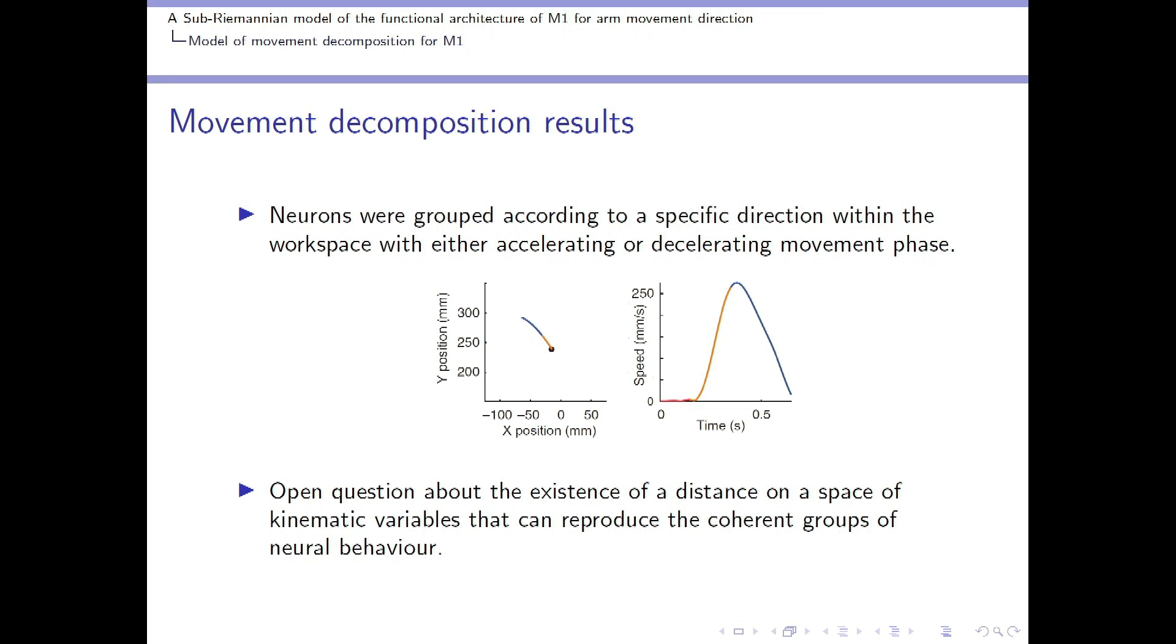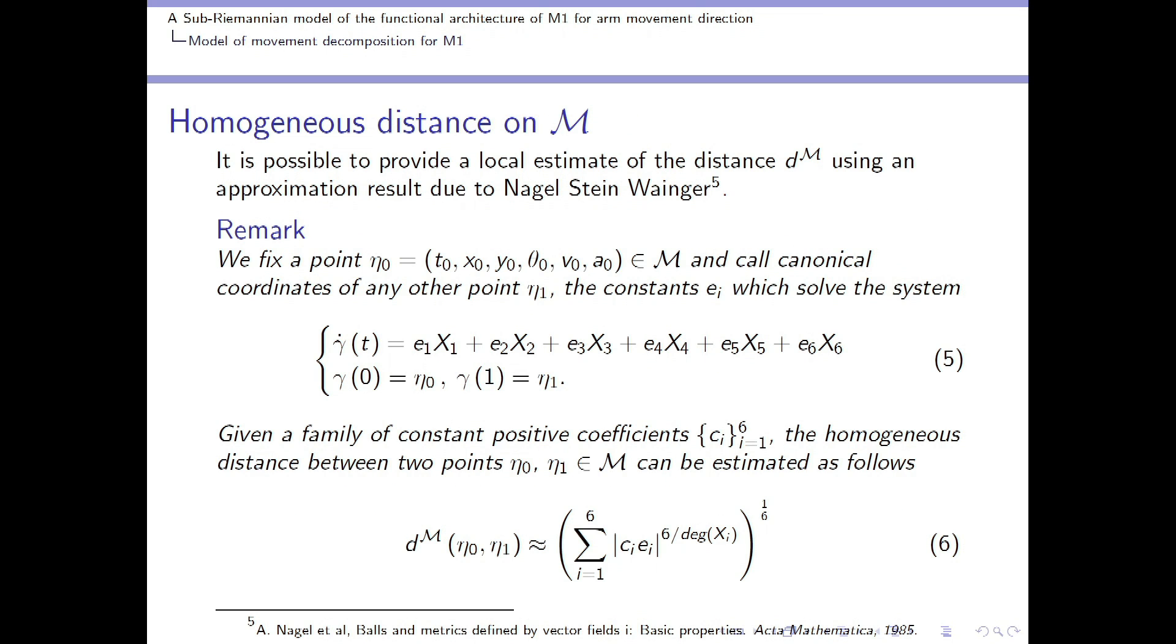I will try to explain more clearly by considering this representation here, where on the left, it is represented a hand path over the positions plane, and on the right, its corresponding speed profile. And the orange color here is named as neural state, and it means that there exists a group of neurons which is active while performing exactly this acceleration phase and this particular movement direction. Hence, the activity of neurons decompose movement in a pattern that is very regular among time. So in this paper, there is a question about the existence of a distance on a space of purely kinematic variables that could be able to reproduce those patterns of movement decomposition.